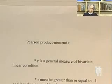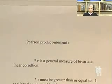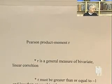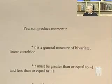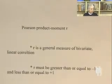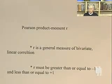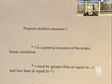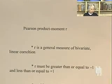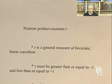So to summarize definitionally: Pearson Product Moment R is a general measure of linear bivariate correlation. R must assume a value greater than or equal to minus one and less than or equal to plus one. You simply cannot have values of R equal to minus 3.8 or plus 19.6. R must assume a value within a very narrow range — between minus one and plus one.